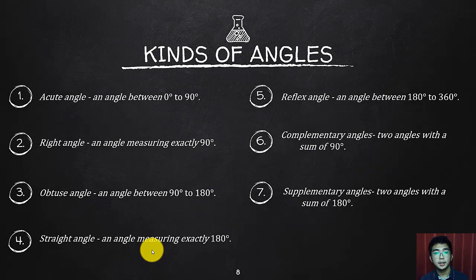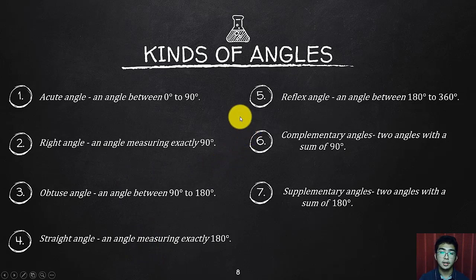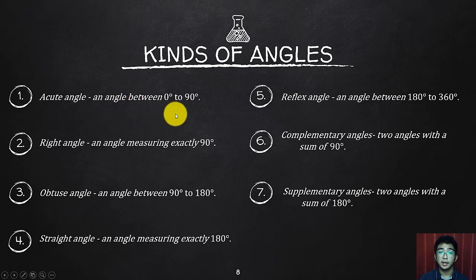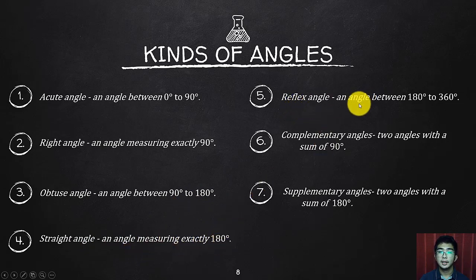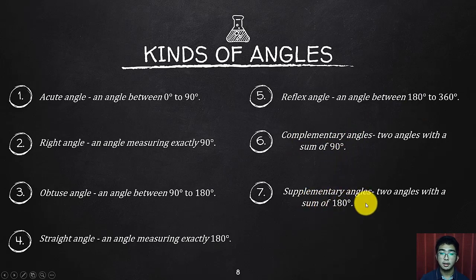We have different types of angles. An acute angle is between 0 to 90 degrees. A right angle measures exactly 90 degrees. Obtuse angles are between 90 to 180 degrees. A straight angle measures exactly 180 degrees. A reflex angle is between 180 to 360 degrees. Angles are complementary if their sum is 90 degrees, and supplementary if their sum is 180 degrees.